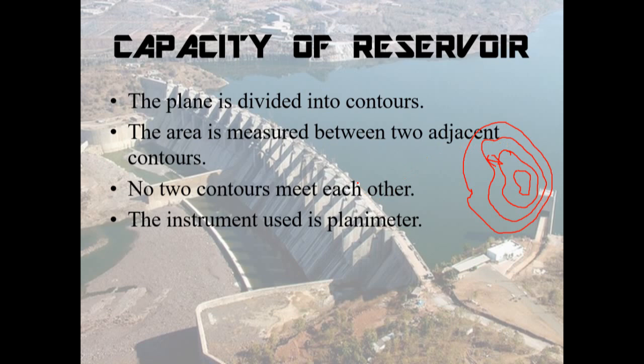Let us discuss the properties of contours. No two contours meet each other, as you can see from what I have drawn. Another important property is that the contour is always closed. The instrument used here is the planimeter.